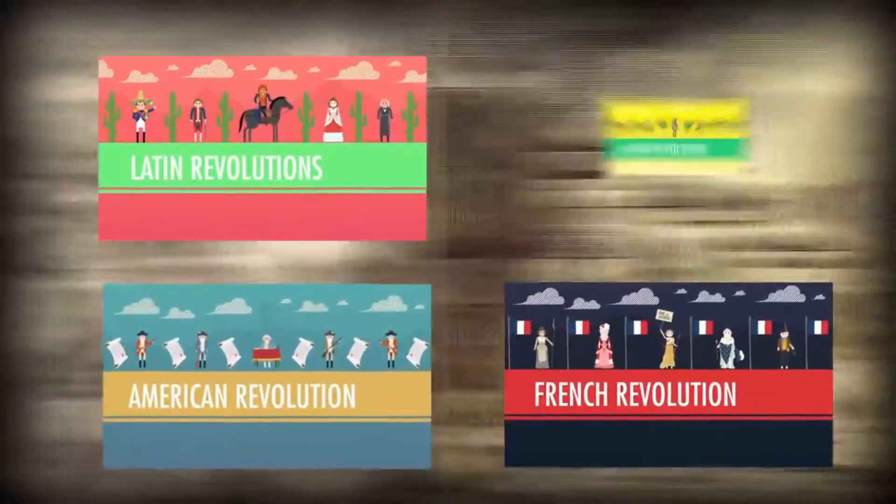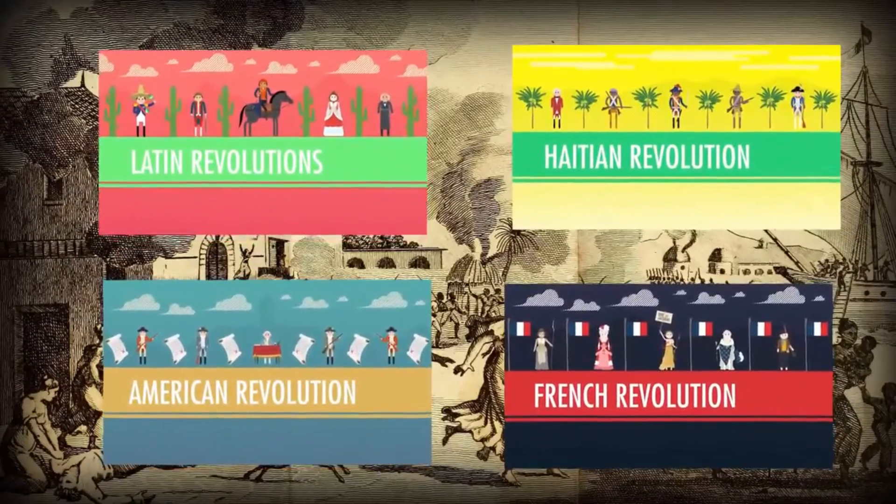Although it occurred around the same time as the French, American, Latin American, and Haitian revolutions between 1750 and 1850, the Industrial Revolution was really the most revolutionary of the bunch. No way, dude, all those other revolutions resulted in new borders and flags and stuff. We've studied 15,000 years of history here at Crash Course, and borders and flags have changed plenty, and they're going to keep changing.